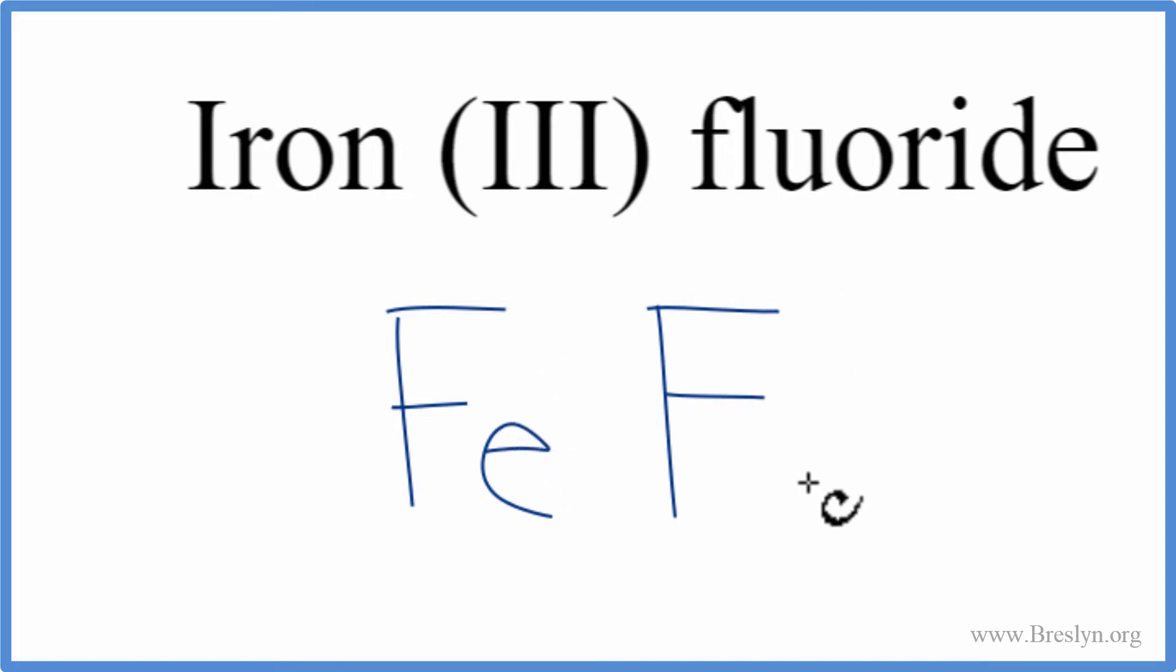Iron, that's a metal. Fluorine, that's a non-metal. So this is going to be an ionic compound. We need to take the charges into account for the iron and the fluorine. They need to add up to zero because iron-3-fluoride is a neutral compound.